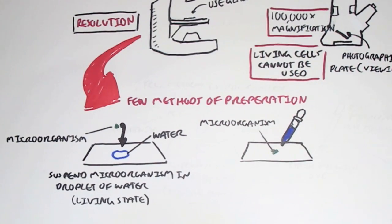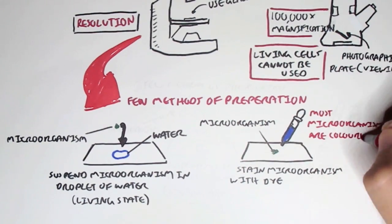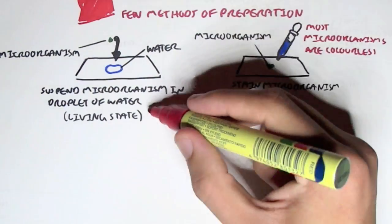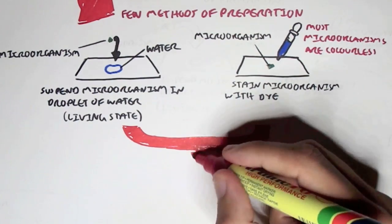And we can also use a dye, because usually microorganisms are actually colorless. And after we dye it, or we place it in water, we can then observe this microorganism using a microscope.